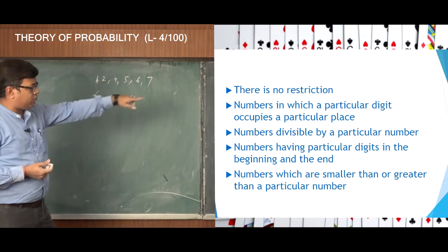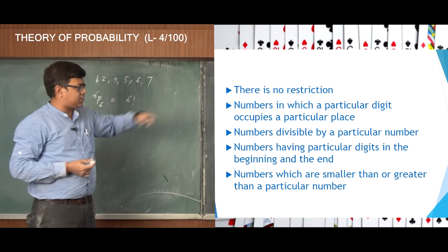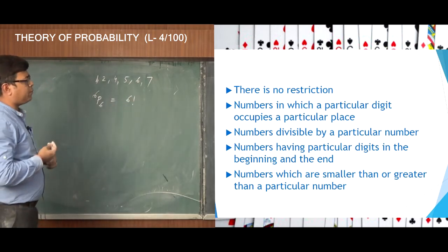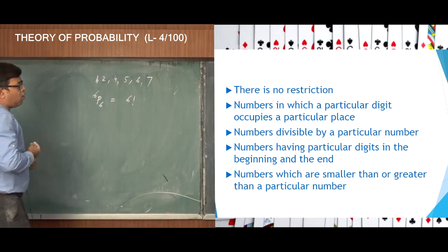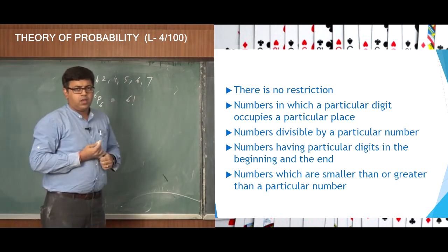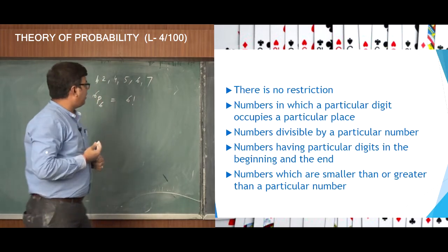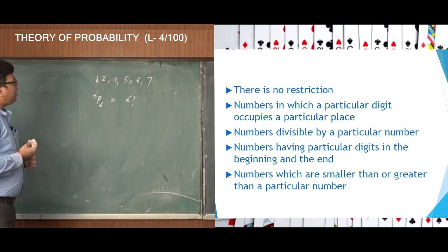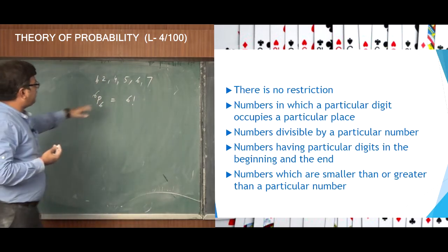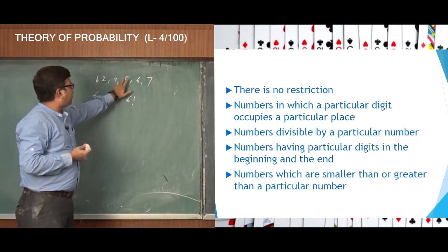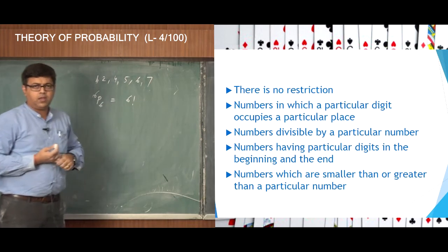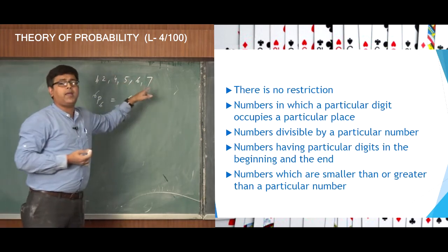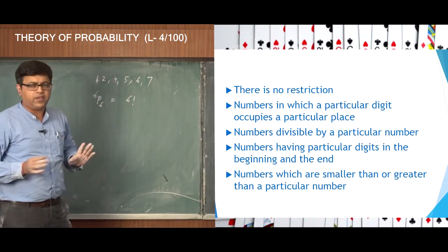When the restriction comes in, the second case is: numbers in which a particular digit occupies a particular place. Let us take a simple case: the digit 5 should always occupy the tens place.